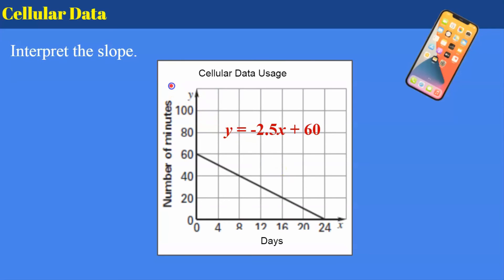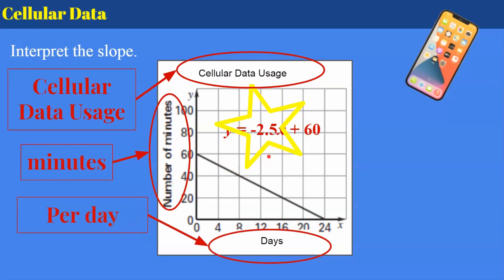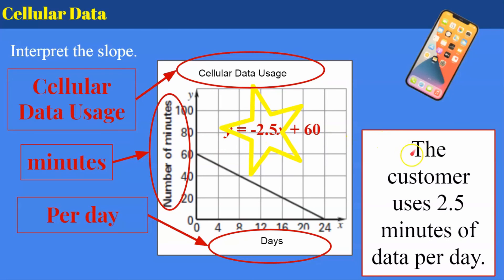Welcome back. Let's see how you did. So our title is cellular data usage. So we know we're talking about a cell phone plan and how much data is being used. We know that our ratio is going to be minutes per day. Then our slope is negative 2.5. So we know it's going down, meaning we're using that much. So here we go. The customer uses two and a half minutes of data per day. Now you could rearrange this. You could say the customer's data usage is two and a half minutes per day. As long as all of the key words are in there, I'm okay.